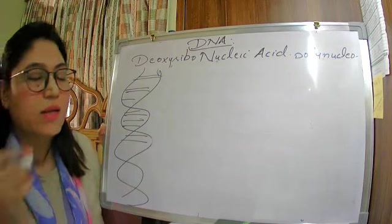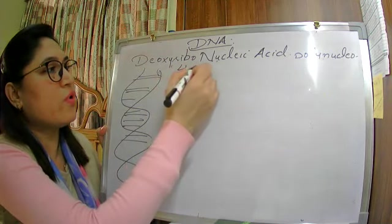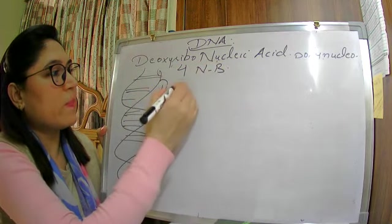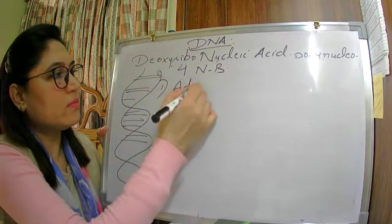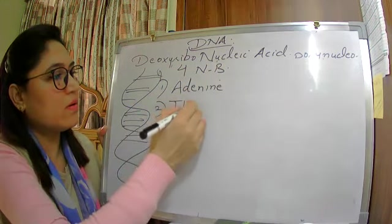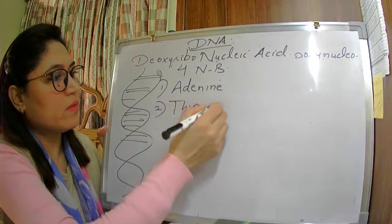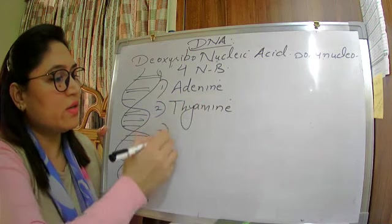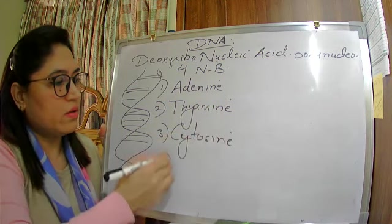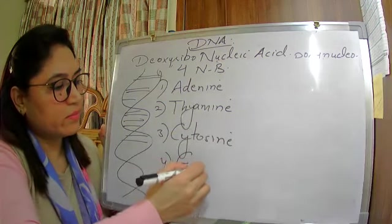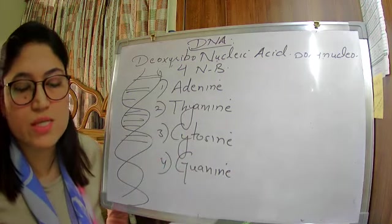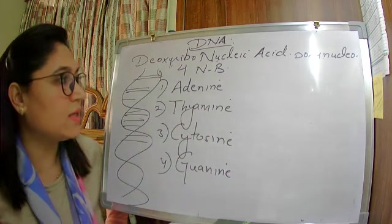How many nitrogenous bases are there in DNA? There are four nitrogenous bases: adenine, thymine, cytosine, and guanine. These are the four nitrogenous bases present in DNA.